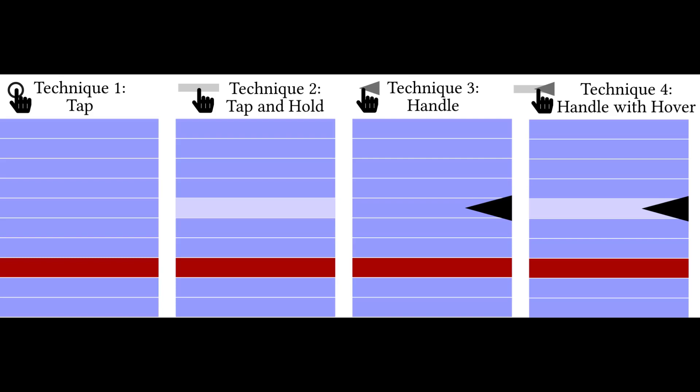For the techniques, we compared the conventional tap interaction with three techniques with visual feedback. The tap and hold technique allowed users to preview which item would be selected if they stopped holding down their fingers, allowing them to correct the selection.